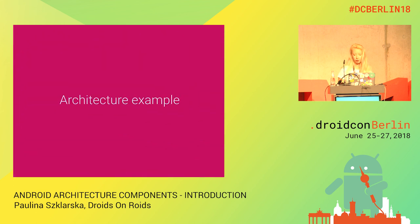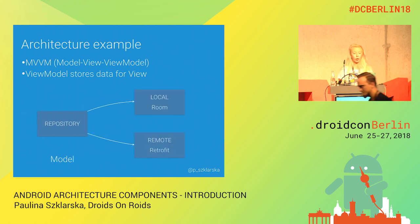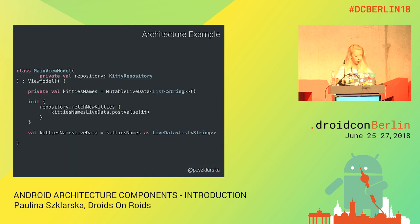I have a simple architecture example to show very briefly. We can use architecture components in the simplest way with MVVM architecture. In MVVM, we have Model, View, and ViewModel. View is our activity or fragment, ViewModel is as I've shown previously, and Model is some kind of repository — it can be a local repository using Room, or a remote repository like an API using Retrofit. It's just an abstraction layer over fetching data.